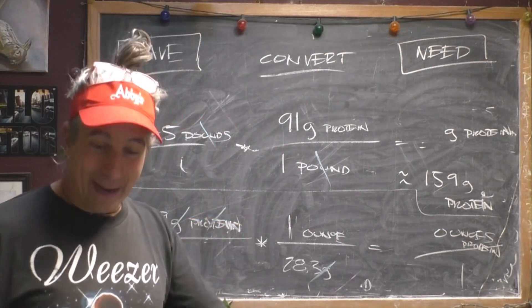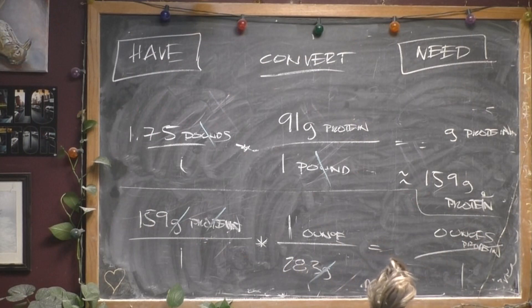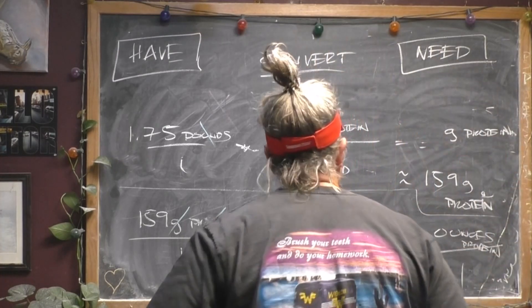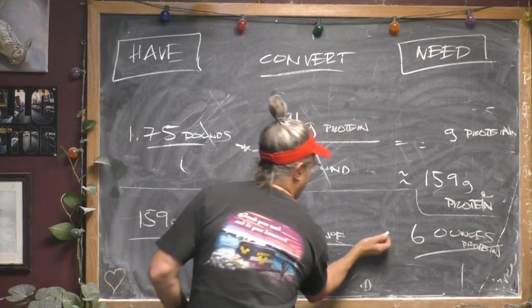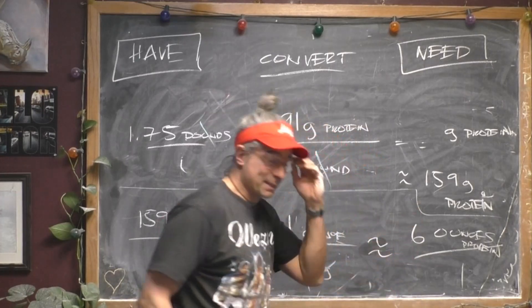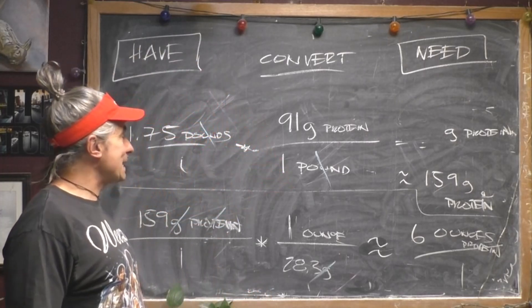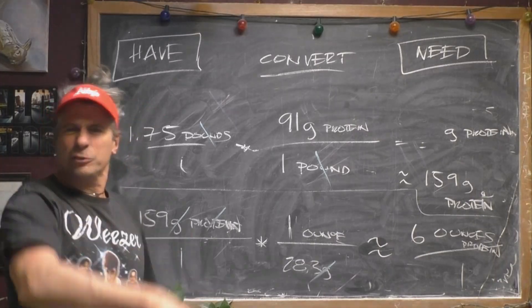It looks like we have to do 159 because the grams are going to divide off. 159 divided by 28.3. That should be pretty straightforward. We're going to get 5.6, closer to 6 than 5. So that, my dear friends, is about 6 ounces of protein. That's how much protein is in our package of Atlantic salmon from Local Acres. Try the next few.